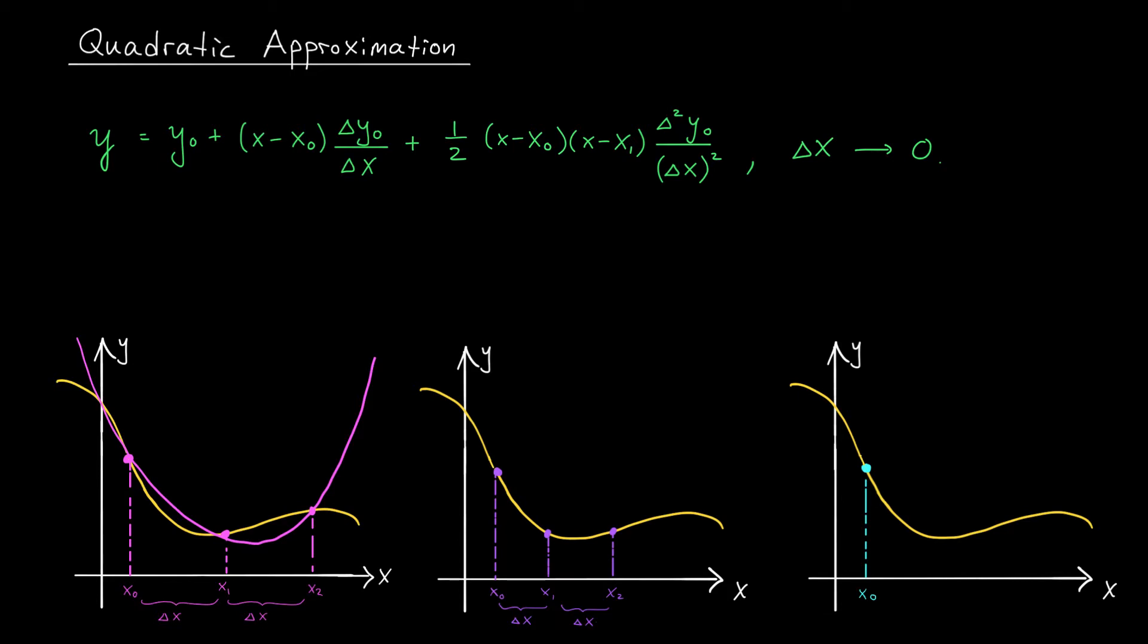Oh, didn't we just do this? If I hand you three equally spaced out points, I should be able to find the equation of the parabola through those points using my Newton interpolating polynomial formula. That's the formula that you see up here.